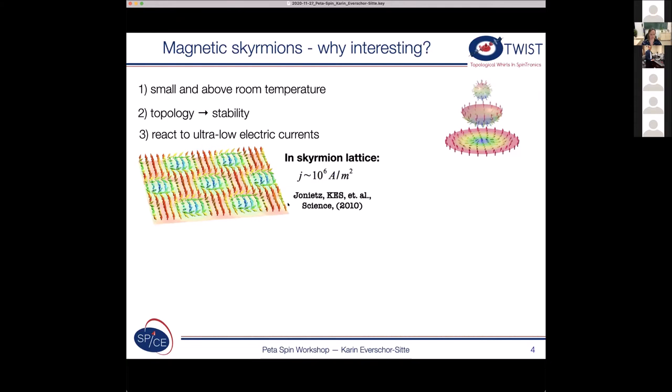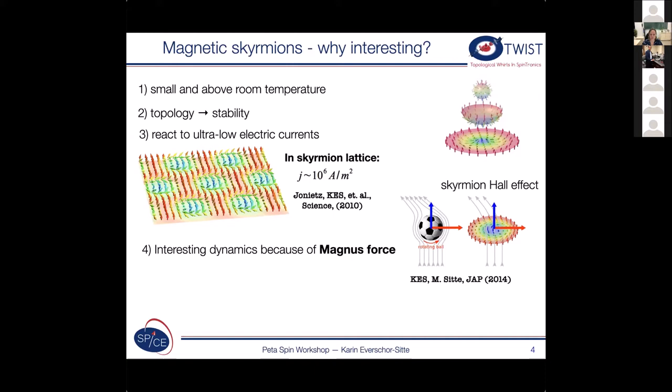They also have an interesting dynamics because of the Magnus force. So Magnus force is something that you might know from sports where you rotate the ball and then a twisted ball bends around and gets some sort of banana kick. So here we have a similar effect. We have an electric current and these skyrmions are not only moving straight along the electric current but they get a component perpendicular to it so that's called skyrmion Hall effect. So they just don't move straight they move towards an angle upon applied current.